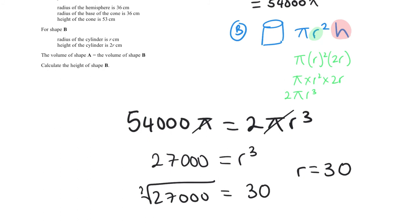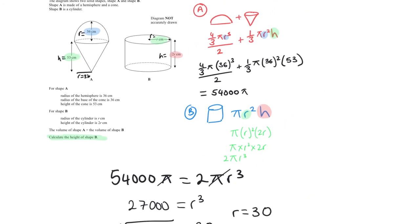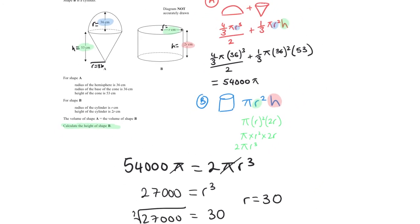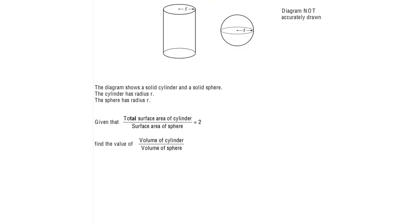We're not finished — the question asks for the height of shape B. Height = 2r = 2 × 30 = 60 cm. If you didn't calculate the height you would have lost the mark.